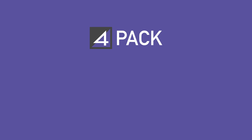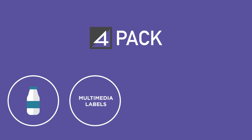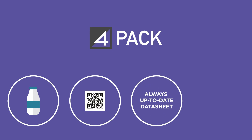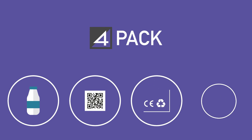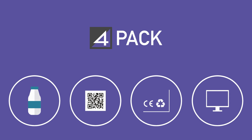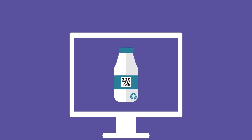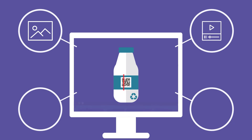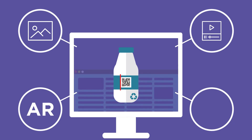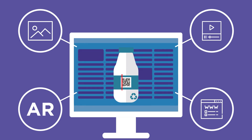With 4Pack, you have simultaneously: packaging for products on shelves, multimedia labels, always up-to-date data sheets, and product sheets for digital catalogs. In addition to the content visible on the packaging, 4Pack manages all the additional information related to packaging by QR code or other near-field communication technologies, to enrich and expand the consumer's experience through a smarter packaging.